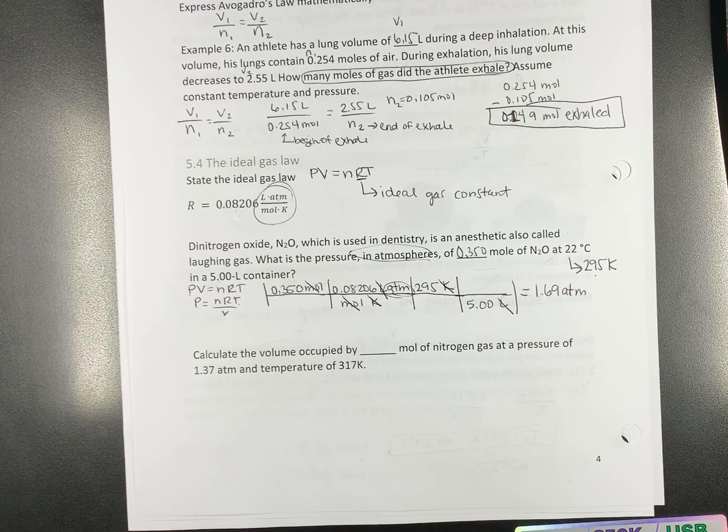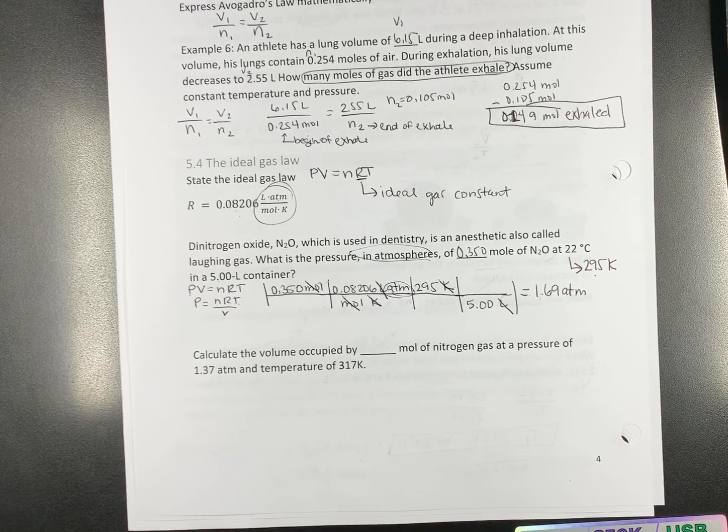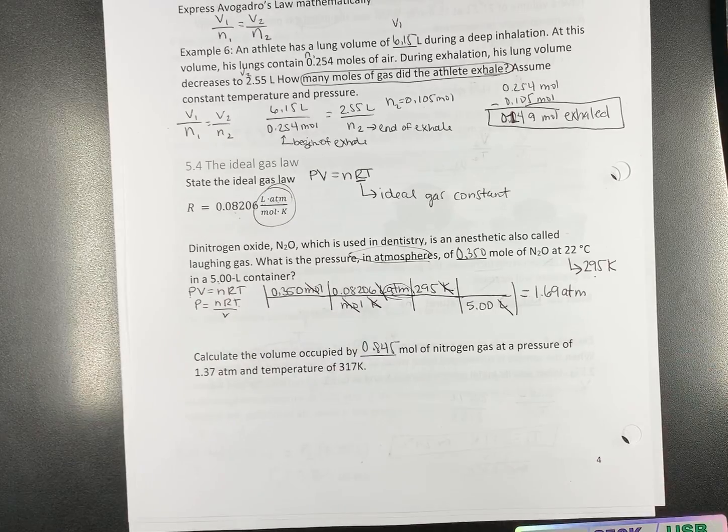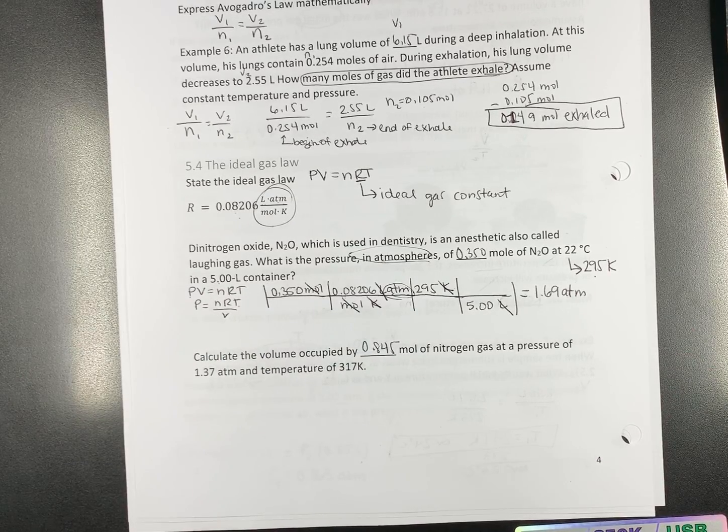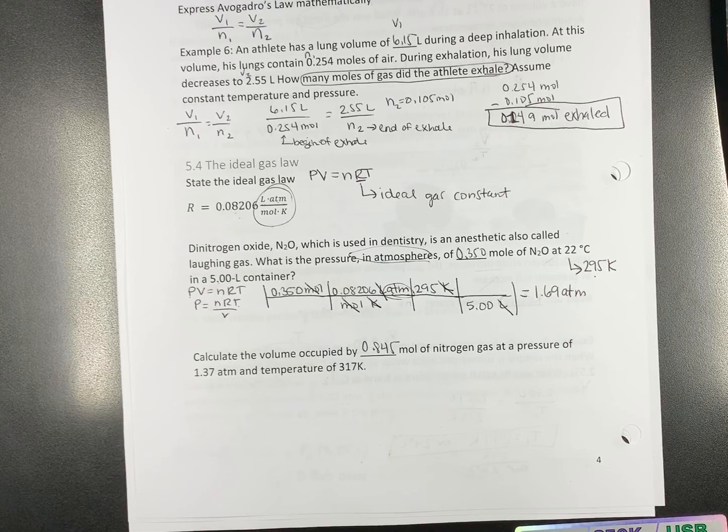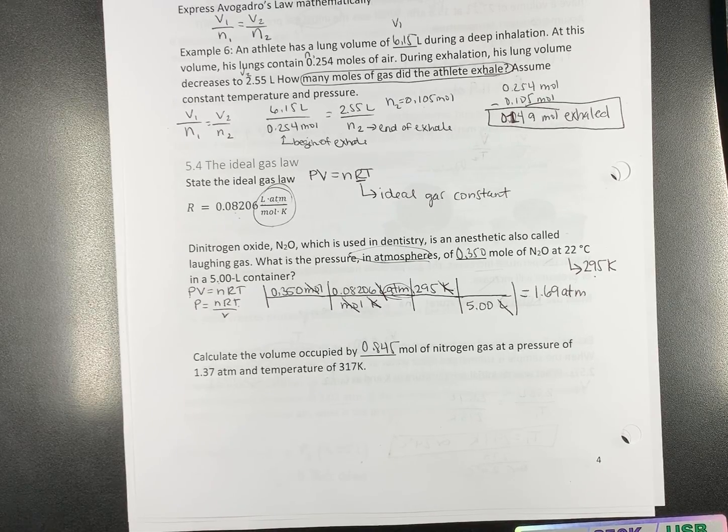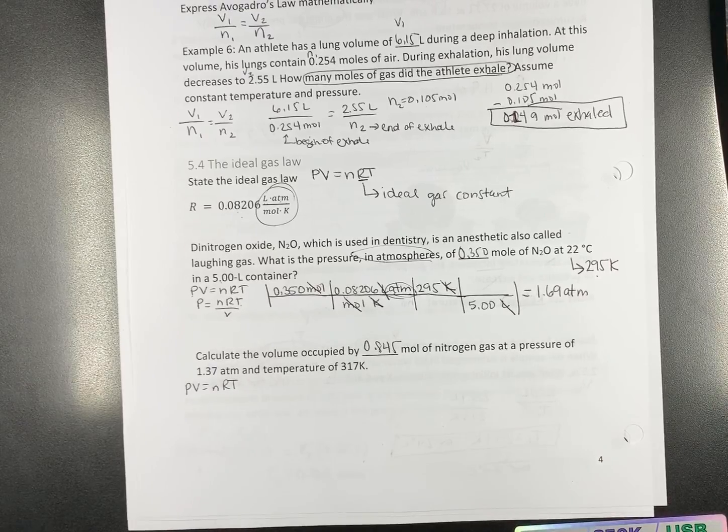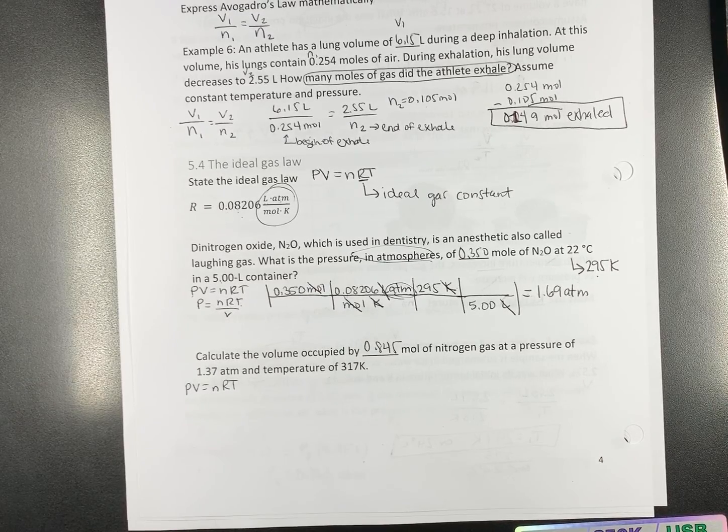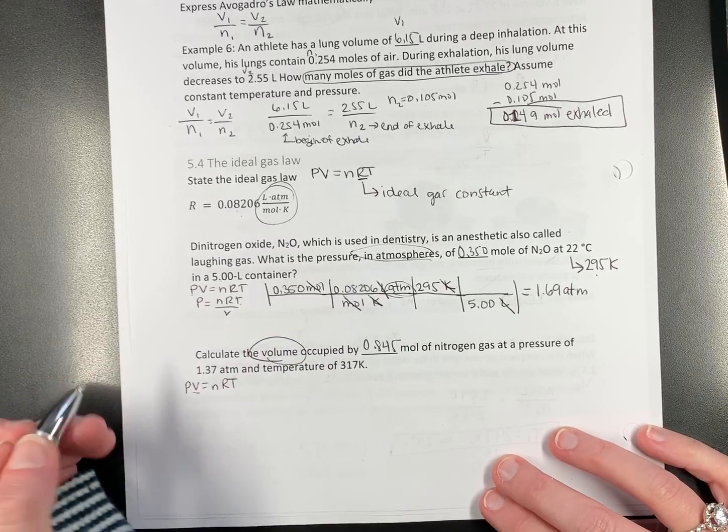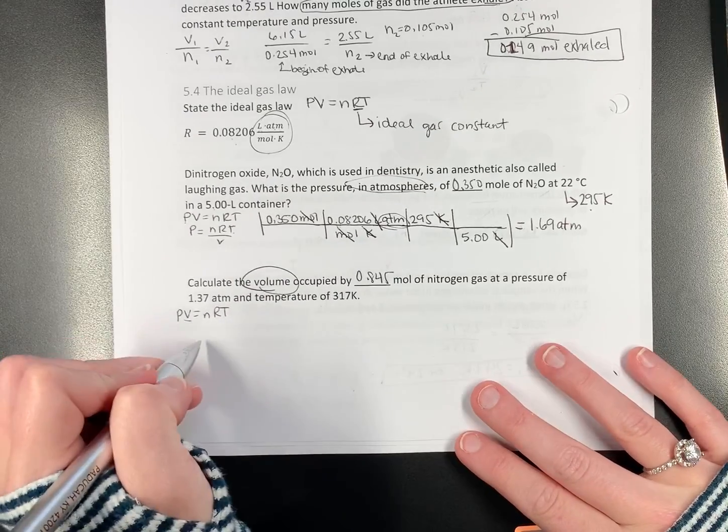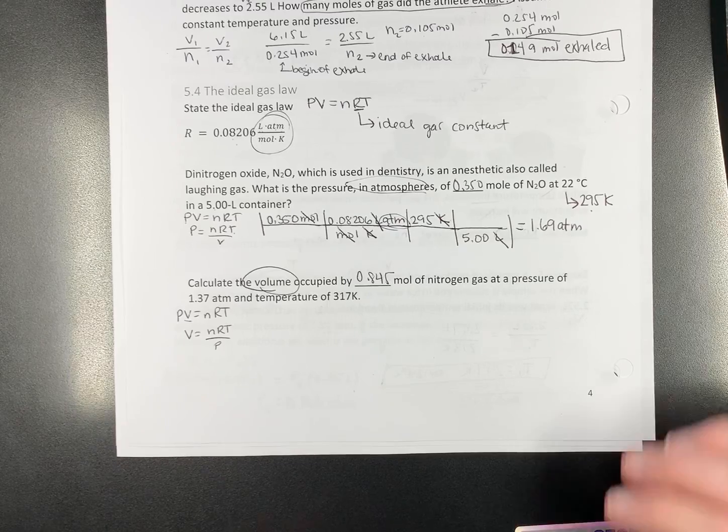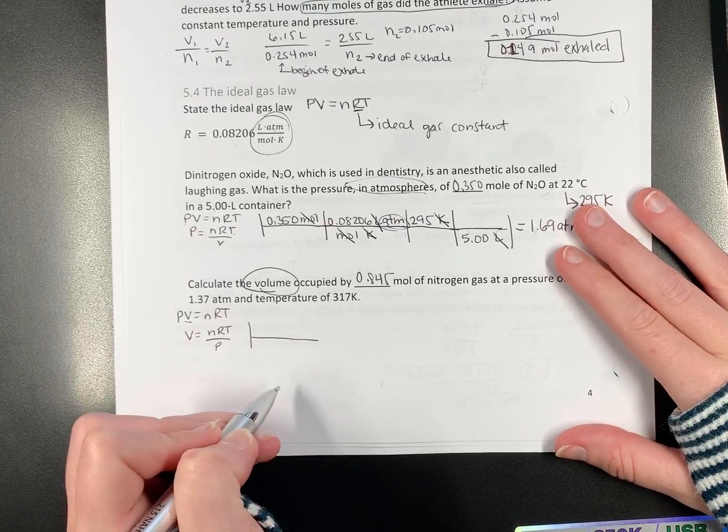Let's try another one. The volume occupied by 0.845 moles of nitrogen gas, pressure is 1.37 atmospheres, temperature 317 kelvins. Here the book tells you to start with your equation. We're trying to find volume. So, V equals nRT over P. Let's plug it in. Make sure our units cancel.